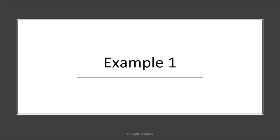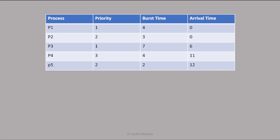Now let us take some problems and solve them. We'll calculate waiting time and turnaround time using the priority preemptive scheduling algorithm. Let us consider five processes. Always remember when using priority scheduling, you need to provide the priority of each process, the amount of CPU time required, and the arrival time. Note that two processes can have the same priority — that is okay. I will be maintaining a timer each second to check at each second whether any new process is arriving or not.